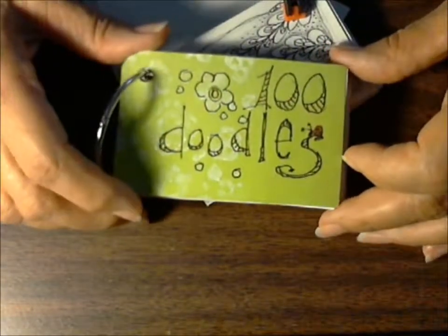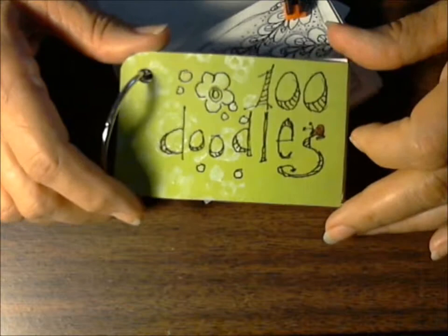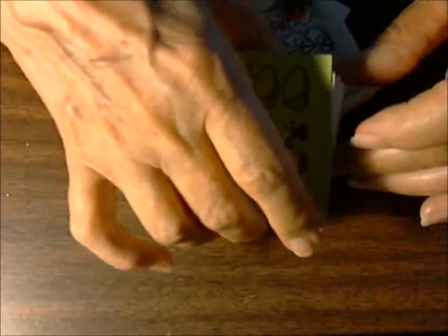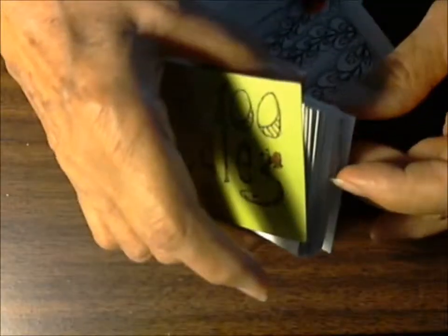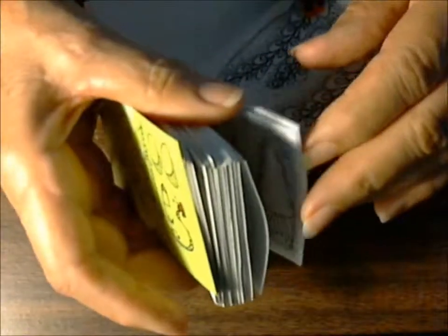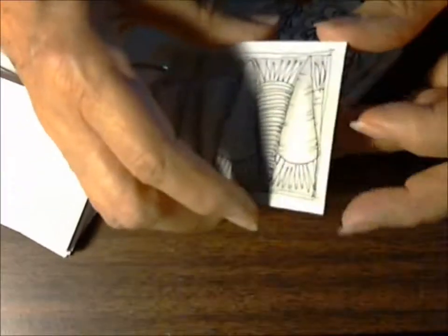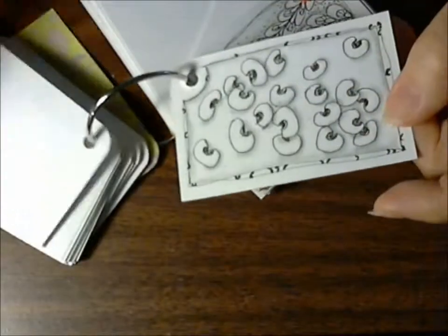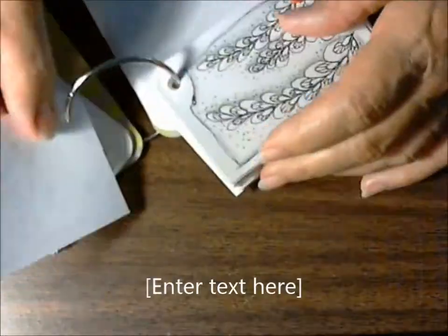Okay, it's Carolyn back with the second half of the 100 Doodle book. I did a video of the first 50 and we ended that with the vegetables and I think the very last one was the black eyed peas.